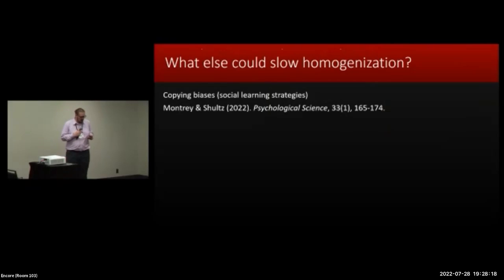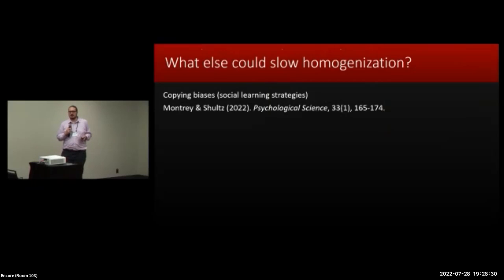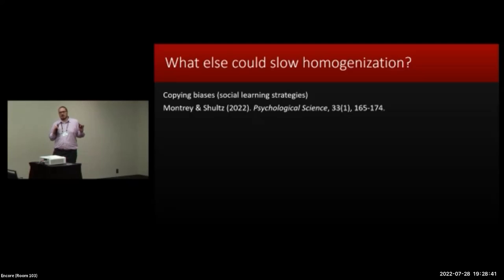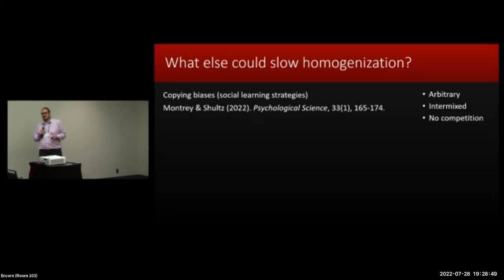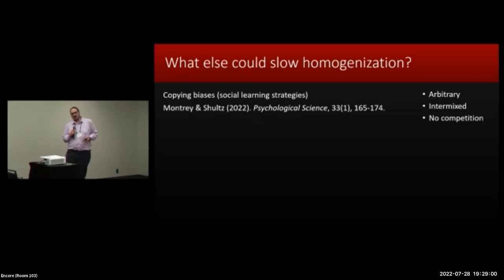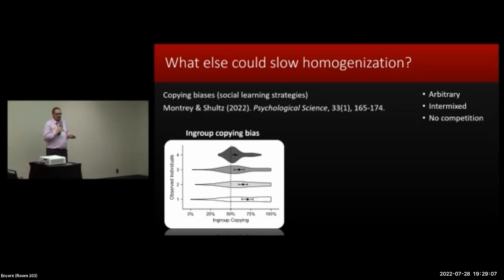I've spoken about how population connectedness affects cumulative cultural evolution. But what else could slow homogenization? One good candidate is copying biases — biases in cultural transmission. We published a series of experiments earlier this year where we looked at what happens when you break people down into completely arbitrary minimal groups. Does this affect who they're likely to copy? These groups were completely arbitrary, fully intermixed — so there's no social network structure — and importantly, there is no competition between the groups. All performance is measured purely individually. What we observe is that people do indeed significantly prefer to copy members of their own group, despite this group being completely arbitrary.